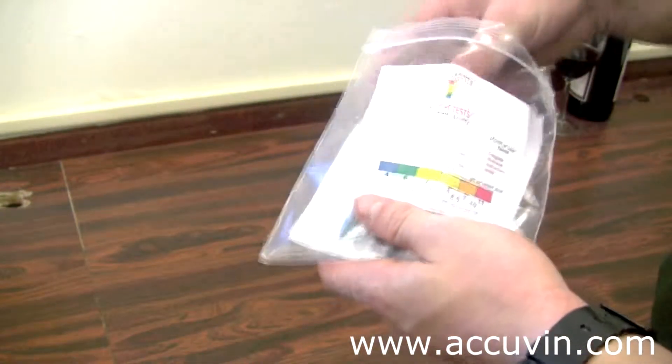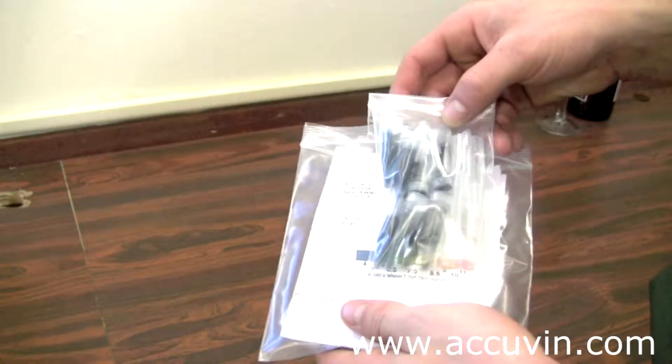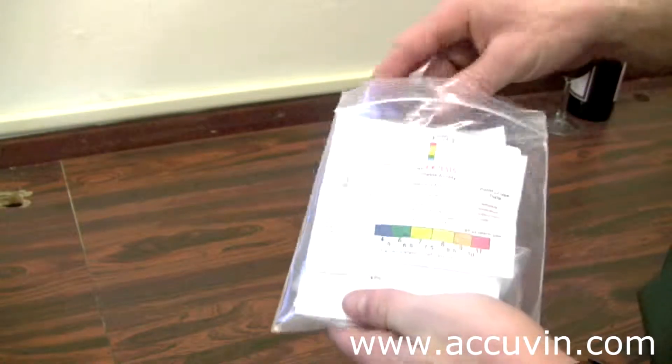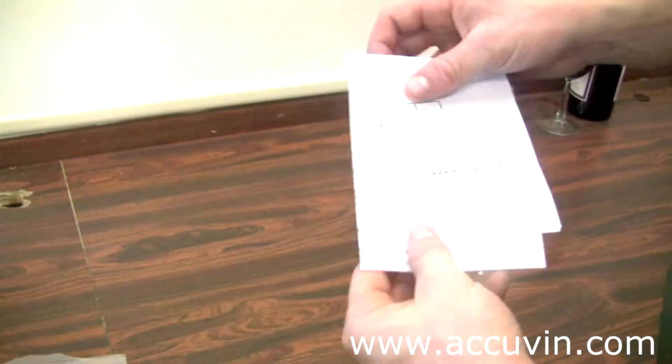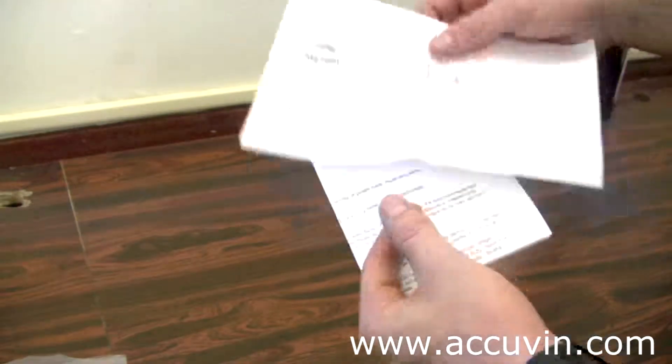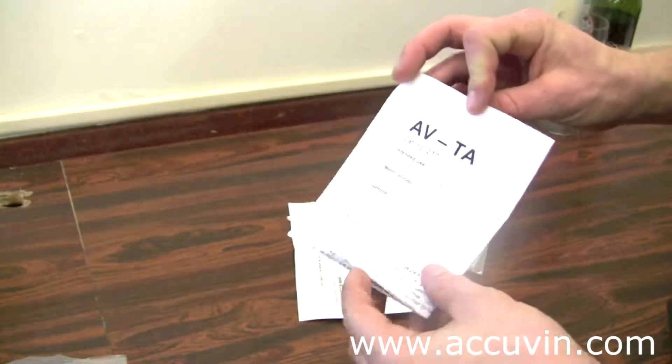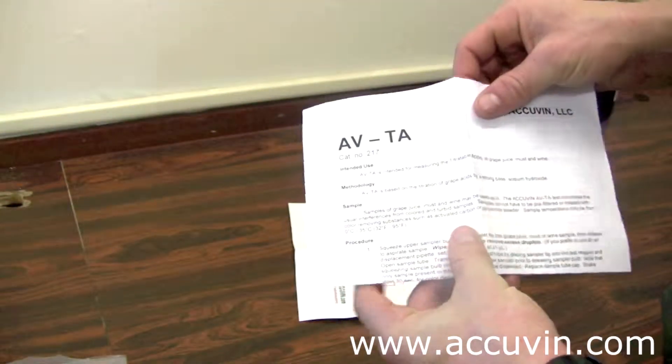Inside the TA test kit, you'll find the samplers and reagent tubes, and also an insert on how to do the test, and an insert on more information about TA.